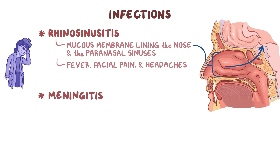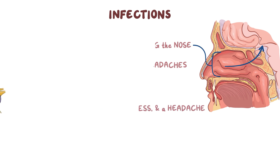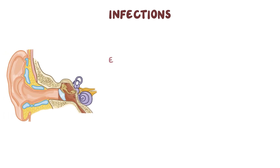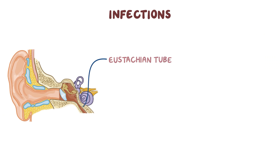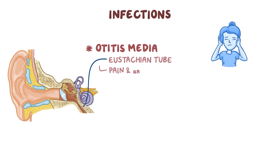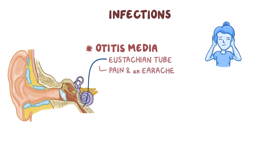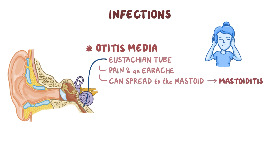With meningitis, people develop a fever, neck stiffness, and a headache. Strep pneumoniae can also invade the eustachian tube and cause an infection of the middle ear, or otitis media, which causes pain and an earache. Chronic otitis media can spread to the mastoid antrum behind the ear, where it causes mastoiditis.